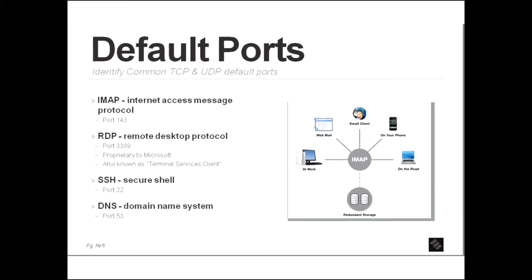Then we have IMAP which is Internet Access Message Protocol and that uses port 143. Then there is RDP Remote Desktop Protocol. This one is proprietary to Microsoft. It is also known as the Terminal Service Client and that is for when you are doing remote desktop, using a default port of 3389. Then we have SSH Secure Shell, the replacement for Telnet, using port 22. Then there is DNS domain name system and that uses port 53.